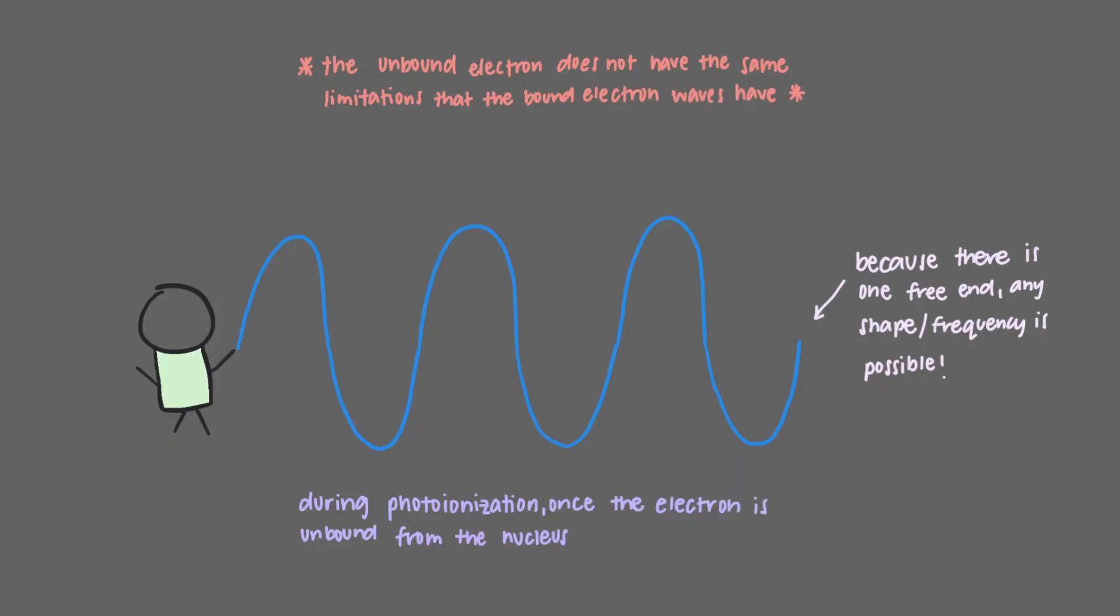Once the electron is unbound from the nucleus, any frequency of light can be absorbed. That means that any frequency of light beyond the threshold will be absorbed, leading to ionization.